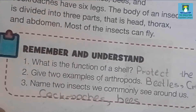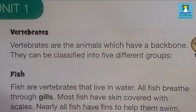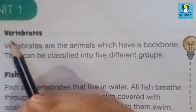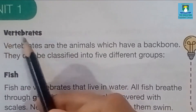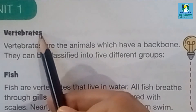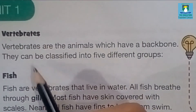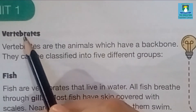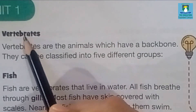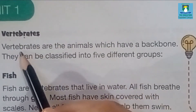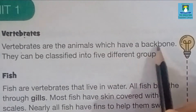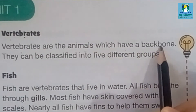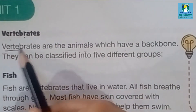Turn the page to page number six. The topic is Vertebrates. What are vertebrates? Vertebrates are actually those animals which have a backbone. Vertebrates are the animals which have a backbone. Underline this definition.